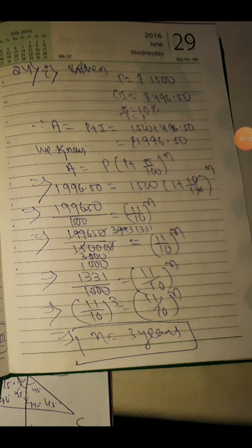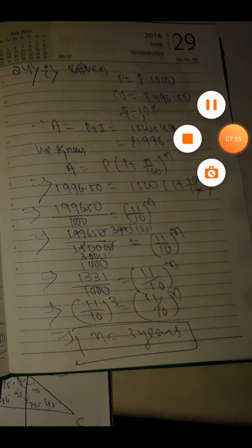R equals 10%, time period we have to find. Amount equals principal plus interest: 1,500 plus 496.50. It will be easy because after finding amount, you put it in the formula it will be easier. Amount = P of (1 + R/100) to the power n. 1996.50/1500 equals (1 + 10/100) to the power n. Simplifying: 1331/1000 equals (11/10) to the power n. Comparing powers, we get n = 3 years.